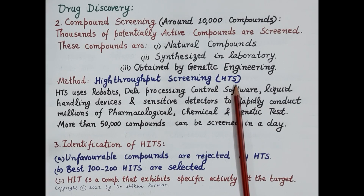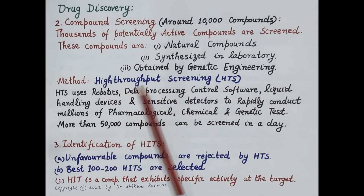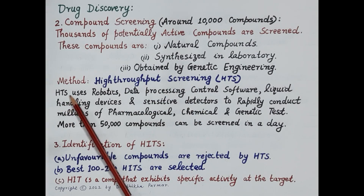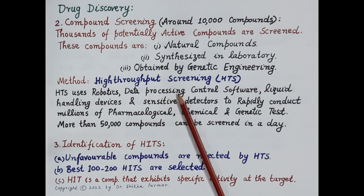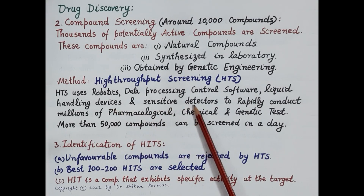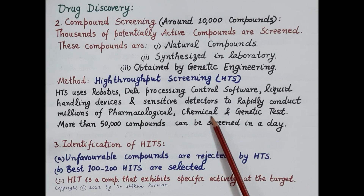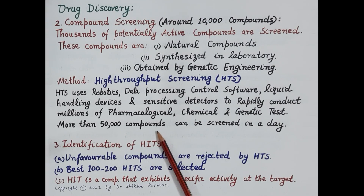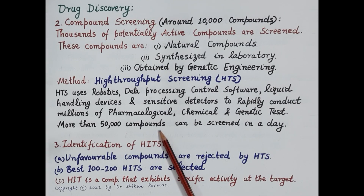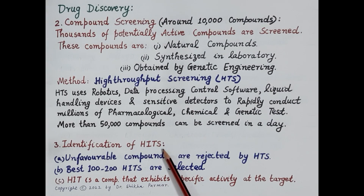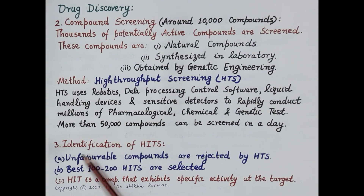One of the most popular and effective screening methods is High Throughput Screening, or HTS. All 5,000 to 10,000 active compounds are screened for their ability to interact with the identified target using HTS. This method uses robotics, data processing control software, liquid handling devices, and sensitive detectors to rapidly conduct millions of pharmacological and chemical assays. More than 50,000 compounds can be screened in a day, and from the initial pool only around 100 to 200 compounds are identified with affinity and selectivity for the target.